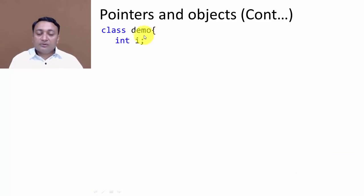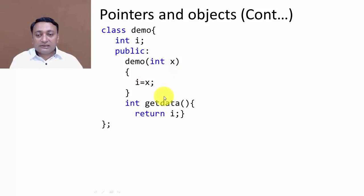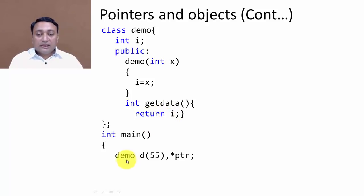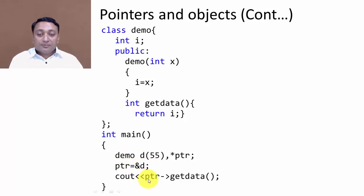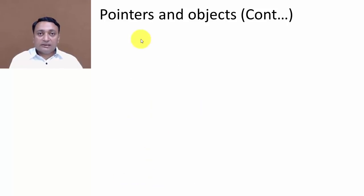Let us see an example. I have a class 'demo' with a private member 'i', a public parameterized constructor 'demo' that takes a value, and a 'getData' function that returns the value of 'i'. Inside main, I call the parameterized constructor by passing value 55, and declare one pointer variable. We write ptr = &d to store the address of object d in pointer. To access class members via pointer, I write pointer->getData(), and since i is 55, the output will be 55.